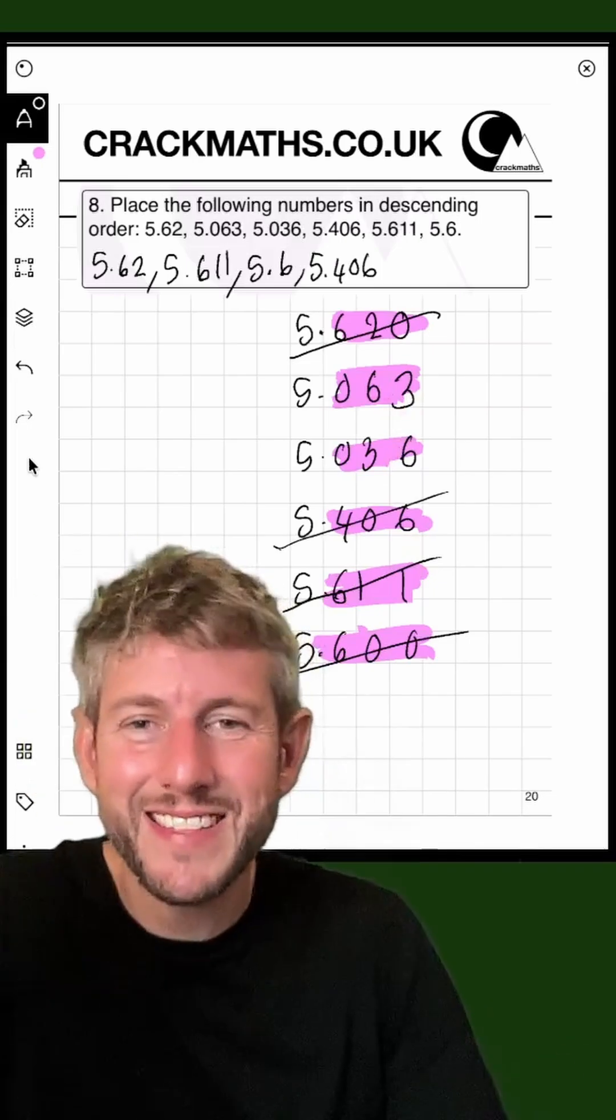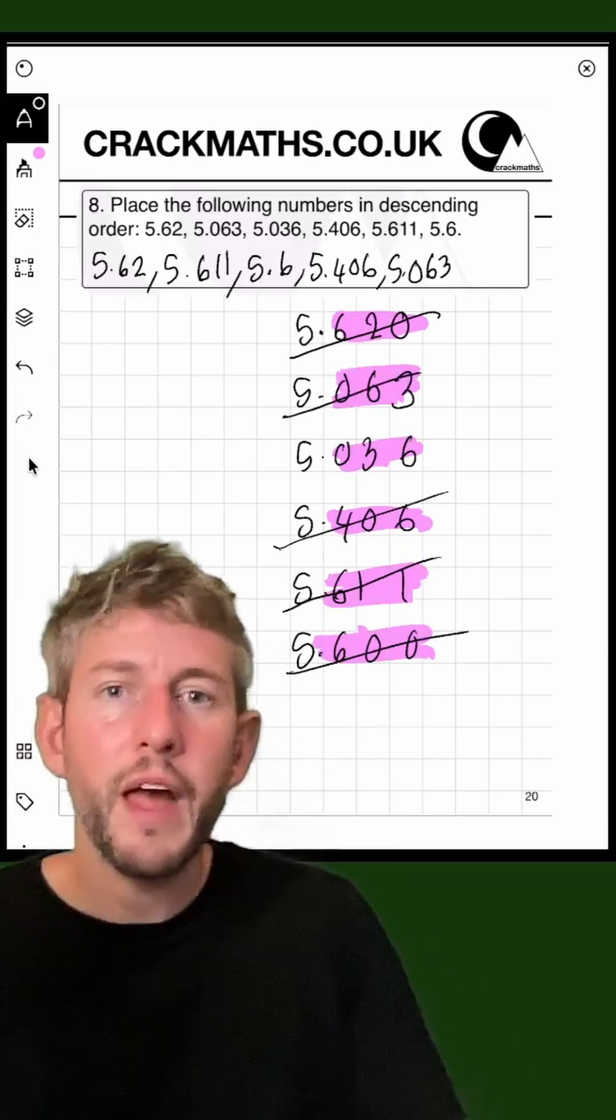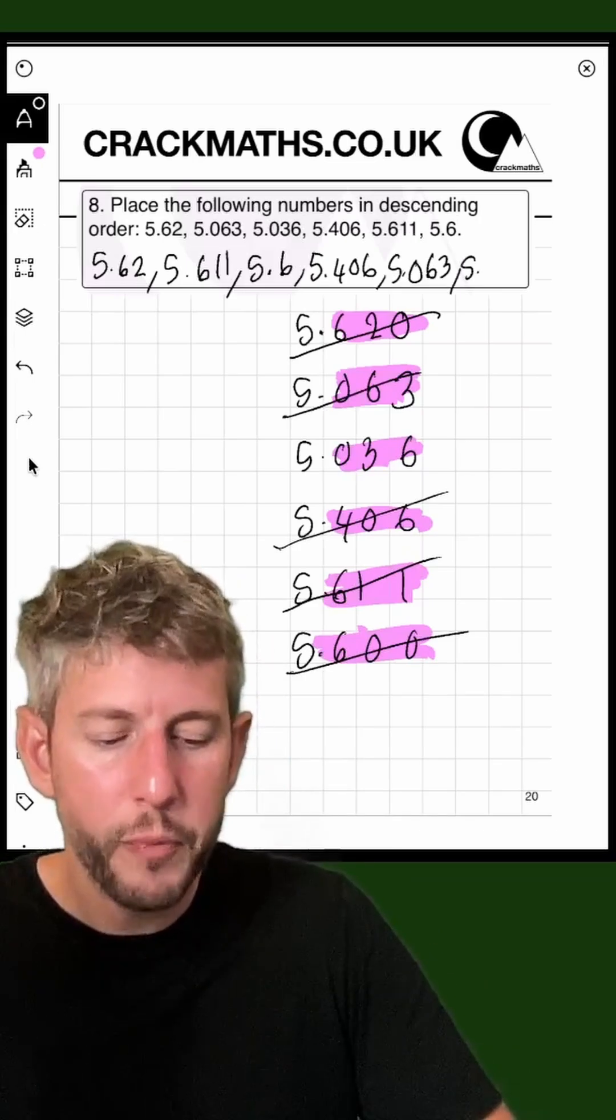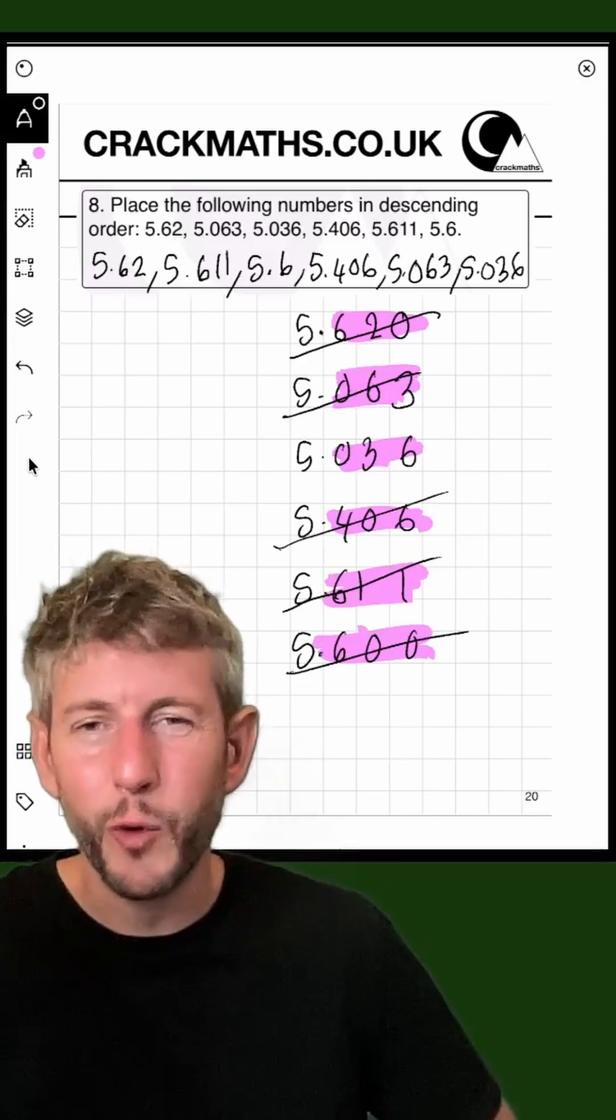Now if I compare 63 and 36, what I know is that 63 is larger than 36, and then the smallest one will be 5.036. So there we go, we've arranged these numbers in descending order.